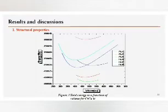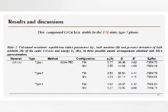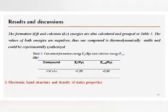As seen from this figure, the ferromagnetic state is the most stable in the phase 3 with the lowest energy. The calculated equilibrium lattice constant, the ground state energy, the bulk modulus, and its pressure derivative are determined by fitting the total energy as a function of volume to the Birch-Murnaghan's equation of state. Table 2 illustrates the predicted results. The formation and cohesion energies are also calculated and grouped in Table 3. The values of both energies are negative, so our compound is thermodynamically stable and could be experimentally synthesized.